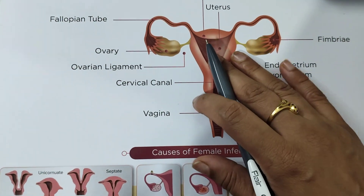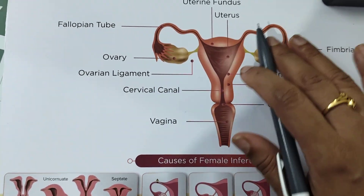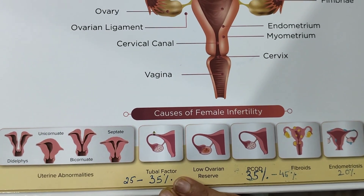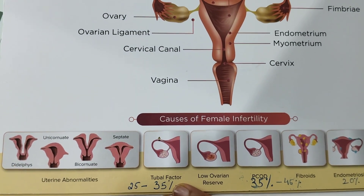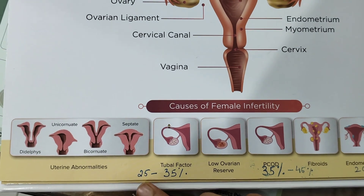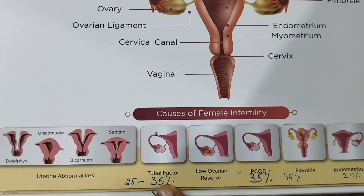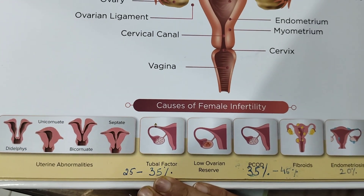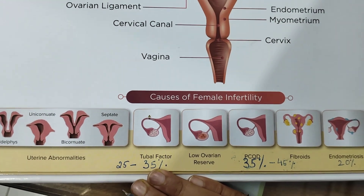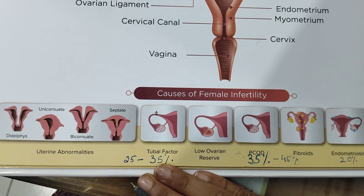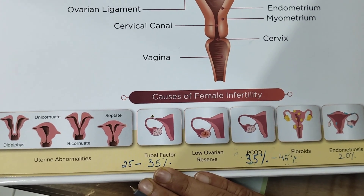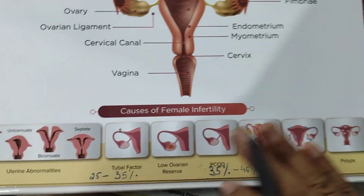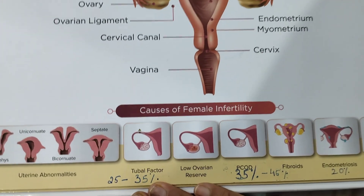The next most common problem is the tubal factor. Fallopian tubes can be blocked or damaged because of infections or endometriosis, and there can be anatomical problems as well. The tubal factor accounts for 25 to 35% of cases. Tubal patency has to be assessed by an ultrasound procedure called SSG, which is now the standard procedure. I have a separate video for the SSG procedure that I will share in the description.